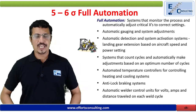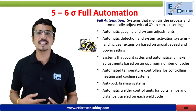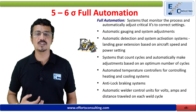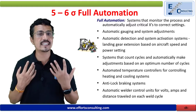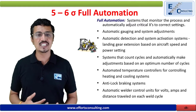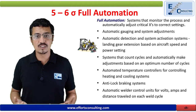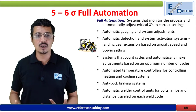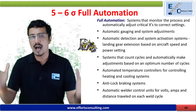Can we have full automation? Can we integrate some automation into the system so that we cannot have repeat mistakes? There are certain examples of full automation: automatic gauging and system adjustment, automatic detection and system activation, systems that count cycles automatically, automated temperature controllers, anti-lock braking systems, and automatic welder control units — these are all examples of automation.